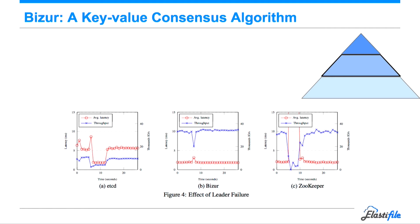With our consensus algorithm Bizur, when you have a node failure, there is a short glitch of about one second, and then it continues operating normally. Zookeeper takes about six to seven seconds where things go a bit crazy, and then some additional time to return to good performance. ETCD is similar — it takes about six or seven seconds before returning to normal operation.